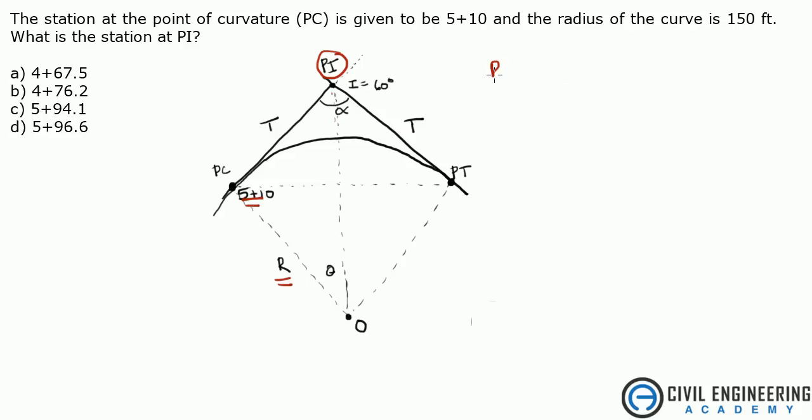So, we're given R, radius is 150 feet. We know the station at PC, which stands for point of curvature. PI is point of intersection, PT is point of tangency.